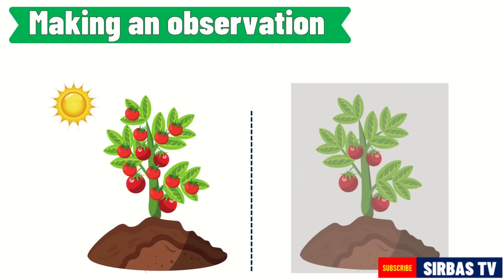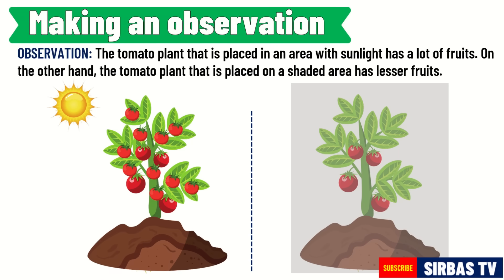Take a look at this picture. What possible observation can you make? One observation that you can state on this scenario is: the tomato plant that is placed in an area with sunlight has a lot of fruits. On the other hand, the tomato plant that is placed in a shaded area has fewer fruits.